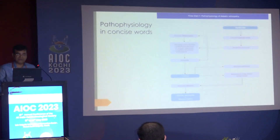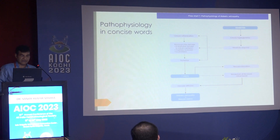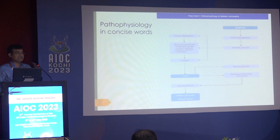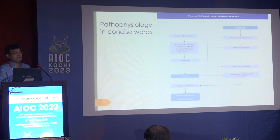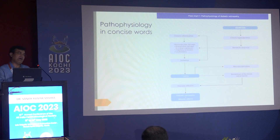In diabetes, chronic hyperglycemia leads to a metabolic response. There is chronic inflammation and microvascular damage — including endothelial damage, capillary occlusion, and leukostasis — all leading to ischemia. Ischemia leads to increased VEGF, and this VEGF leads to neovascularization and also the breakdown of the blood-retinal barrier. Ultimately all this leads to neovascularization and edema.